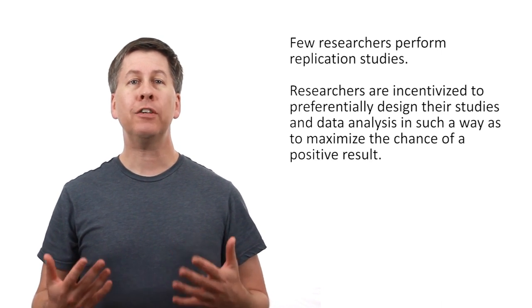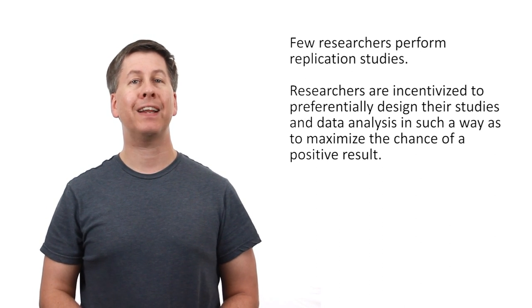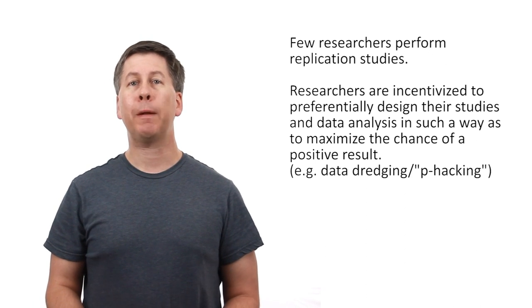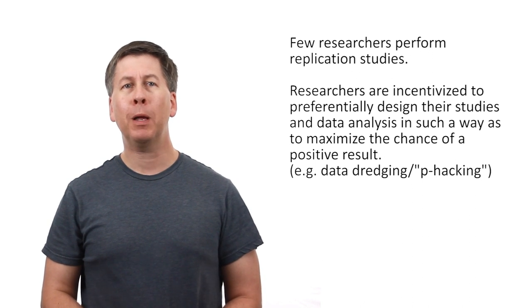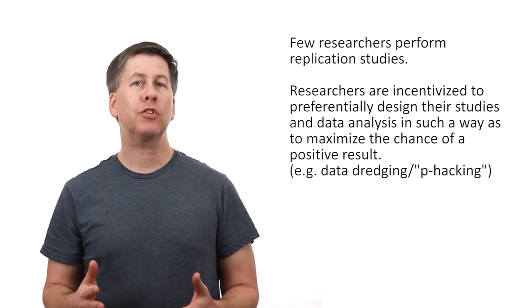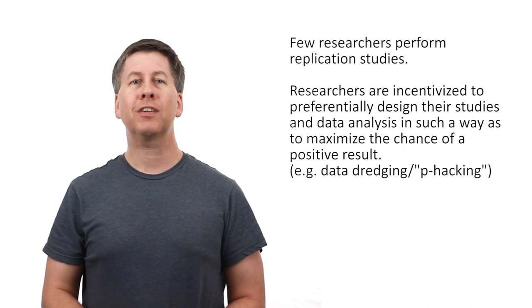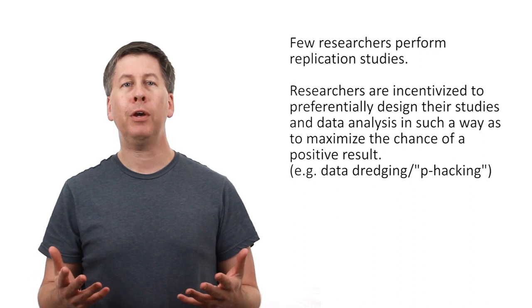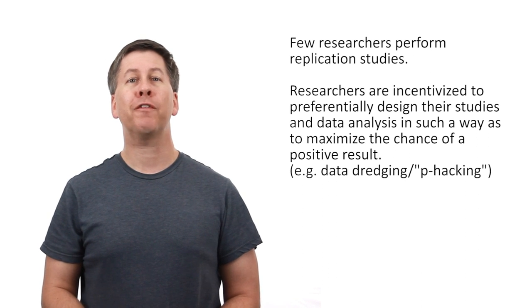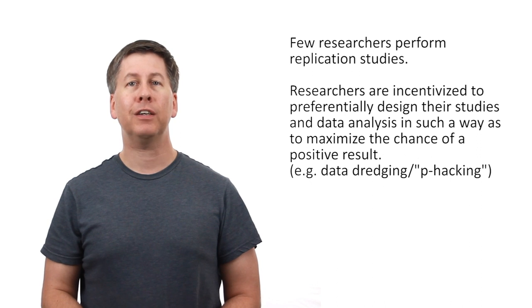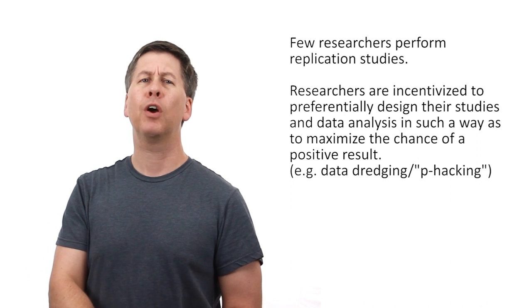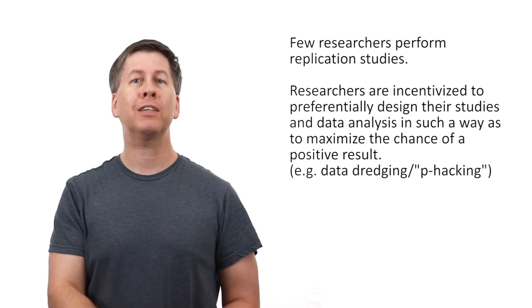Second, researchers are incentivized to preferentially design their studies and data analysis in such a way as to maximize the chance of a positive result. This results in a practice called data dredging or the catchy term p-hacking. One form of p-hacking includes investigating tons of secondary outcomes since the greater the number of outcomes examined, the greater the chance that statistically predictable error will result in something appearing to be statistically significant, even if it's not a true effect. Another form of p-hacking is to not define your sample size at the outset and instead collect data just until the results happen to dip below that magical p less than 0.05 cutoff, when if data collection was continued, the p-value might easily rise up higher again.